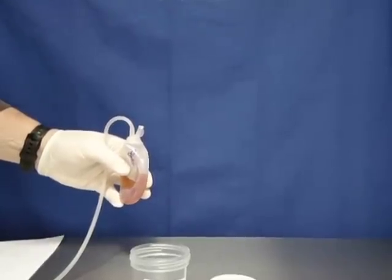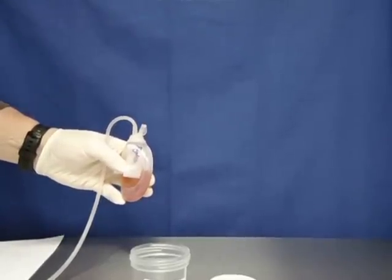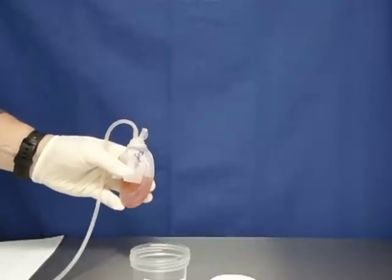In this brief video, we will see how to empty a closed suction drain, such as a Jackson-Pratt drain, and measure the output.